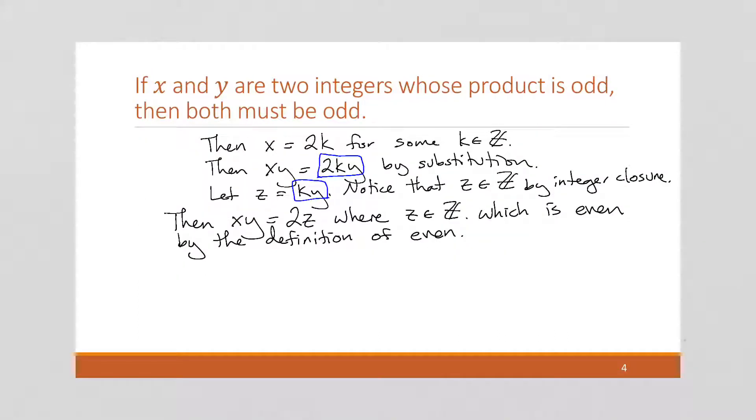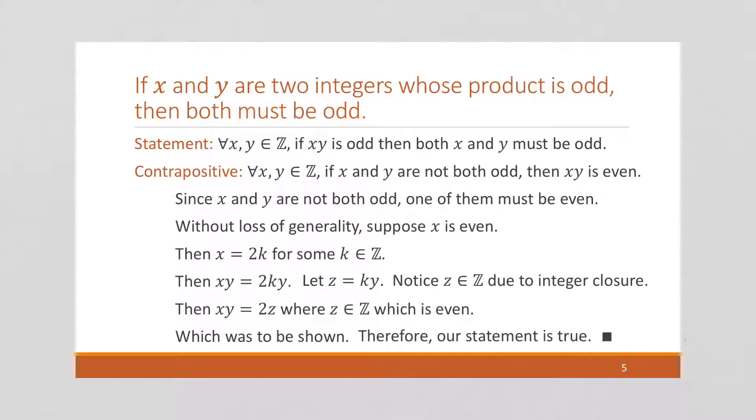All right? And that's what we've just done. We've showed that xy is even. So this is which was to be shown. Which means the contrapositive is true. Which means the original statement right here is true.